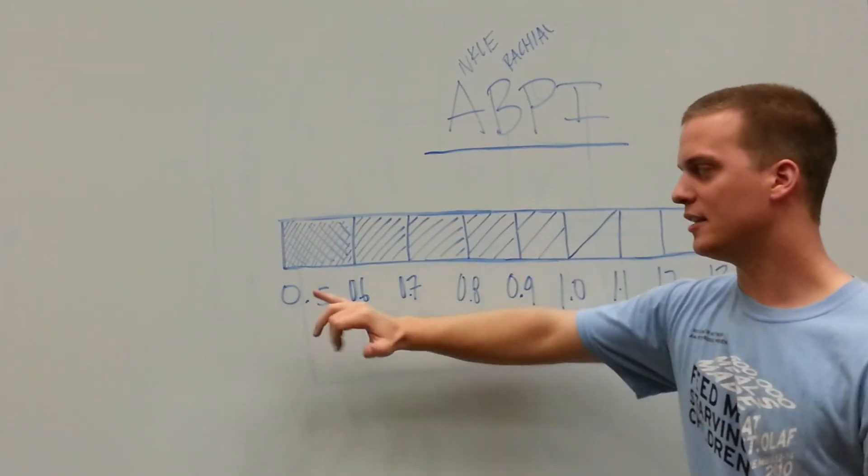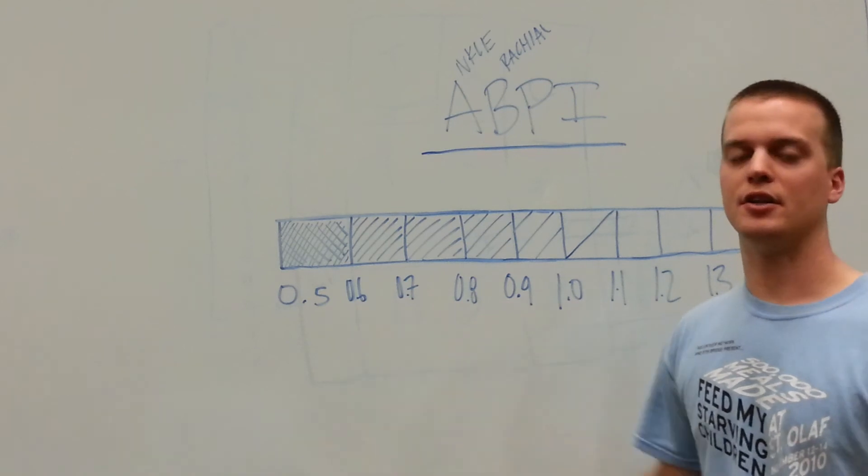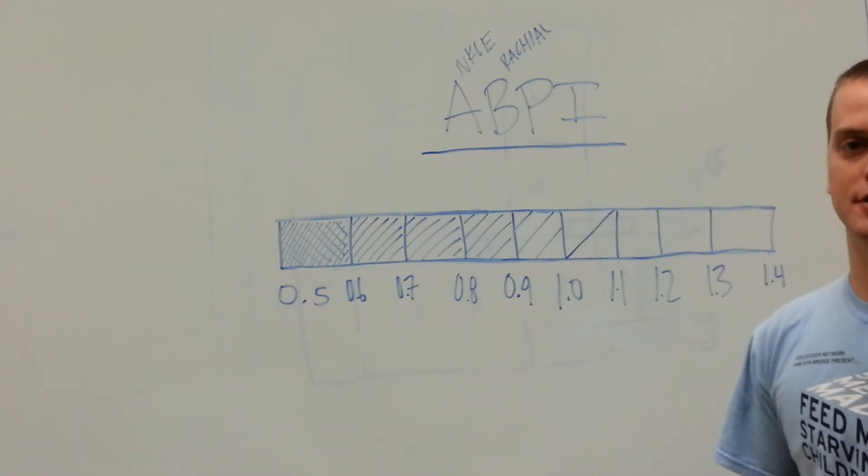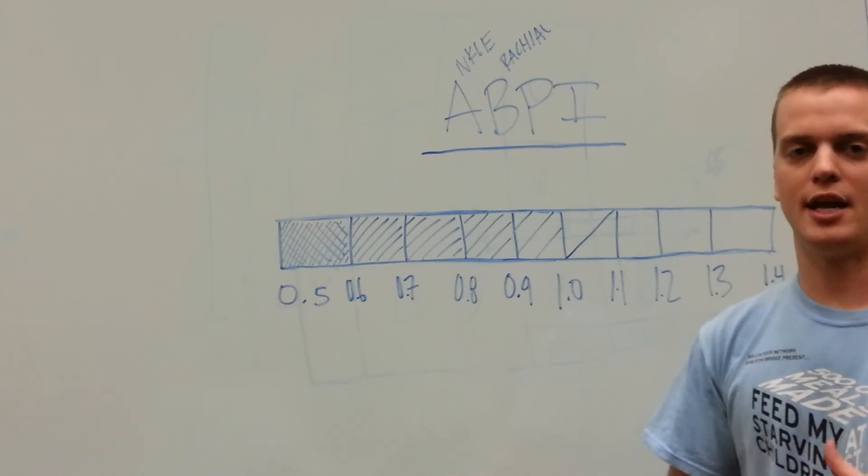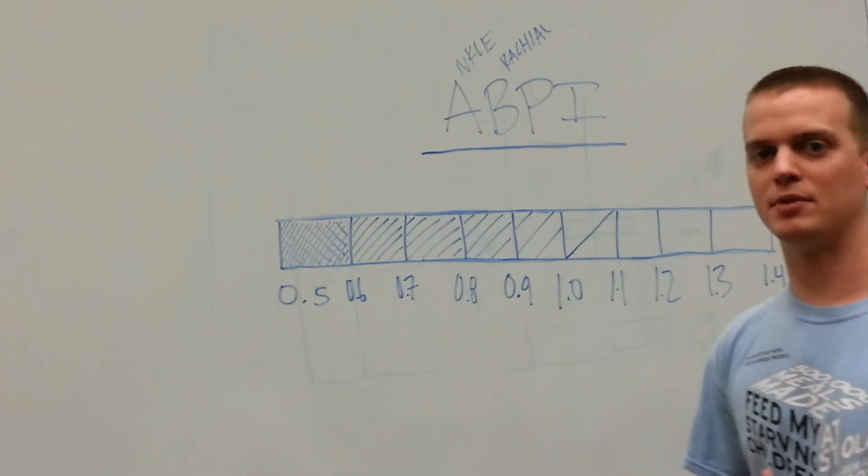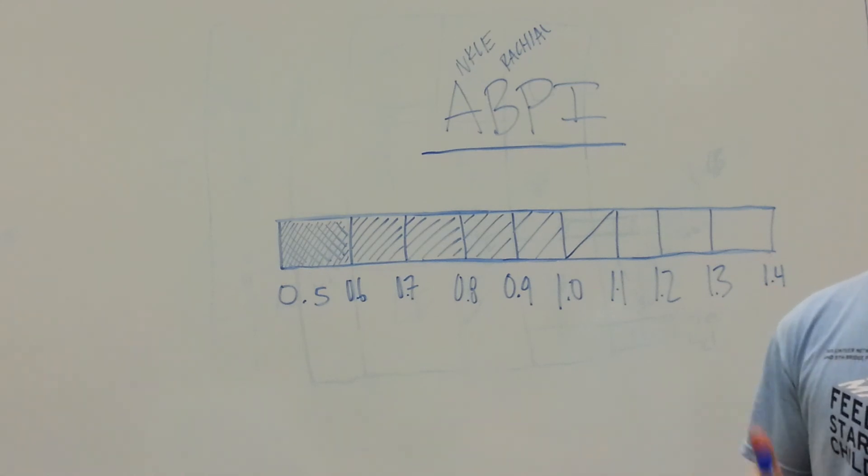Now as you go down here, if you get to 0.5, it's very severe. You're at end stage peripheral arterial disease, it's not good. You need to go to a practitioner and they'll put you on some things, anticoagulants, things that will prevent the occlusions associated with atherosclerosis.